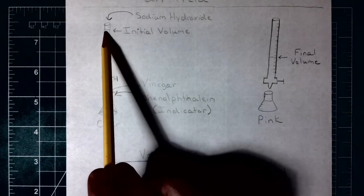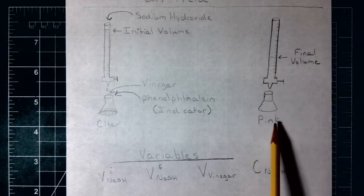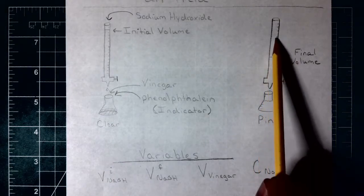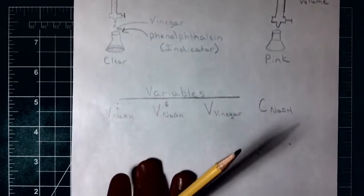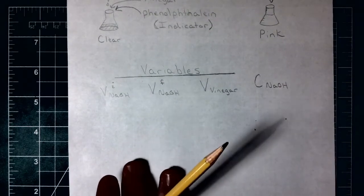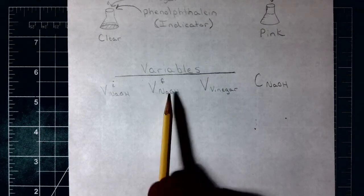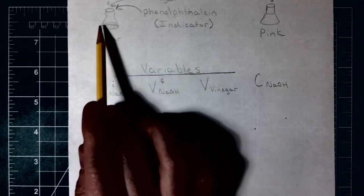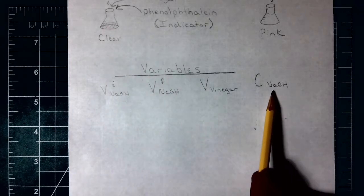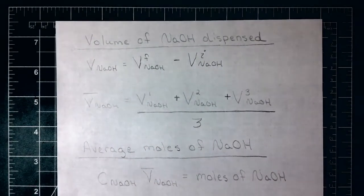We're going to measure the initial volume in our burette and the final volume after we get our pink color. The difference between those two is going to be the volume of sodium hydroxide that we added. So our known measurements will be: initial volume of NaOH, final volume of NaOH, the volume of vinegar we put into the flask, and the concentration of the sodium hydroxide.